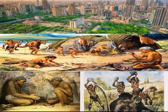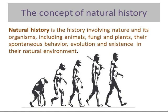Now the concept arises of what natural history is all about. Looking at the definition of natural history, it is the history involving nature — its organisms which include animals, fungi and plants — their spontaneous behavior, their evolution, and their existence in their natural environment. So when speaking of natural history, we are studying every element of nature as it is found in its natural environment itself.